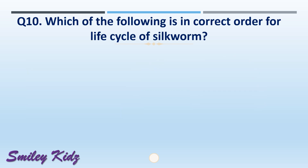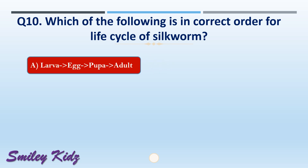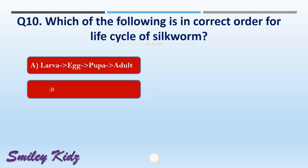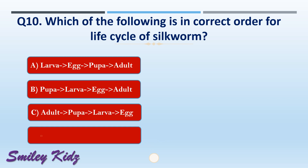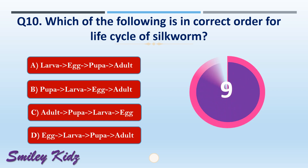Question number ten: which of the following is the correct order for the life cycle of the silkworm? The options are: A) larva, egg, pupa, adult; B) pupa, larva, egg, adult; C) adult, pupa, larva, egg; or D) egg, larva, pupa, adult. The right answer is option D: egg, larva, pupa, adult. This is the correct order for the life cycle of the silkworm.